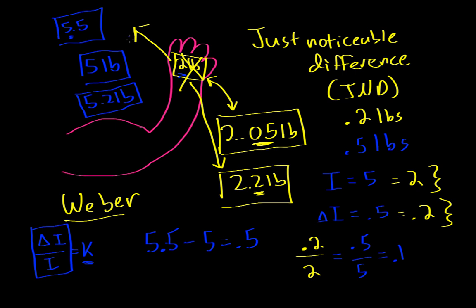Weber's Law works for tactile stimuli like lifting a weight, but it also works for auditory stimuli. If you're in a quiet room, you can whisper and someone can hear you. But at a rock concert, you have to yell at the top of your lungs for someone next to you to hear you. That's because the background intensity in a quiet room versus a concert is different, so the delta I — whether you're whispering or yelling — changes in accordance with the background intensity. That's what Weber's Law is saying.